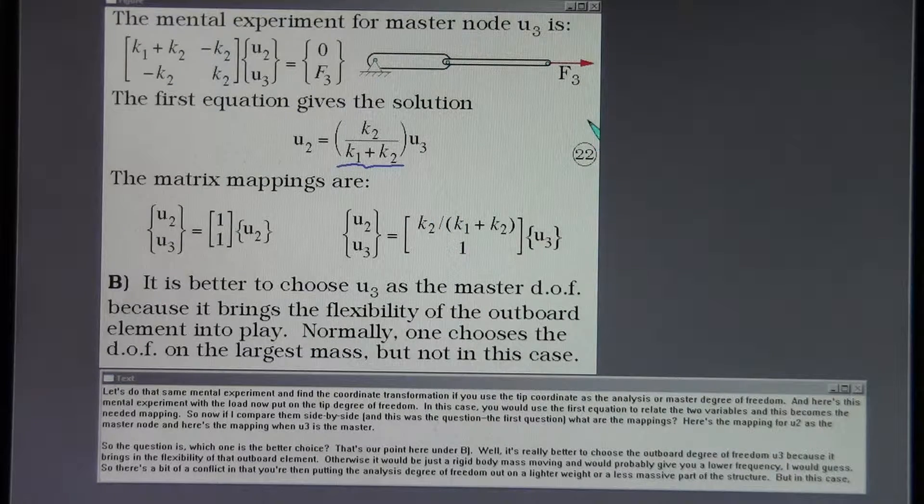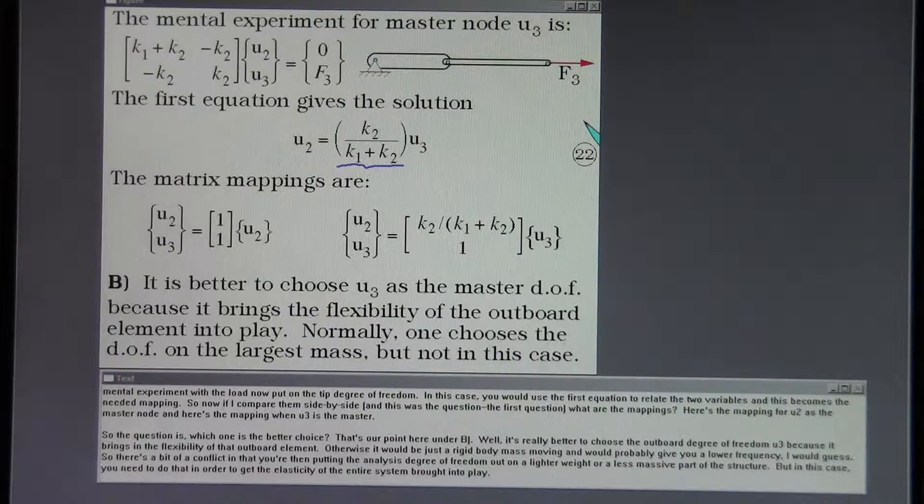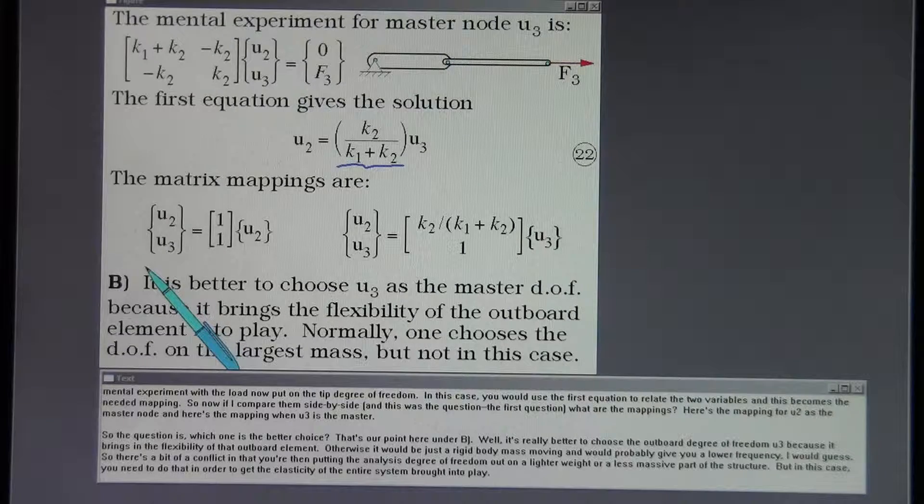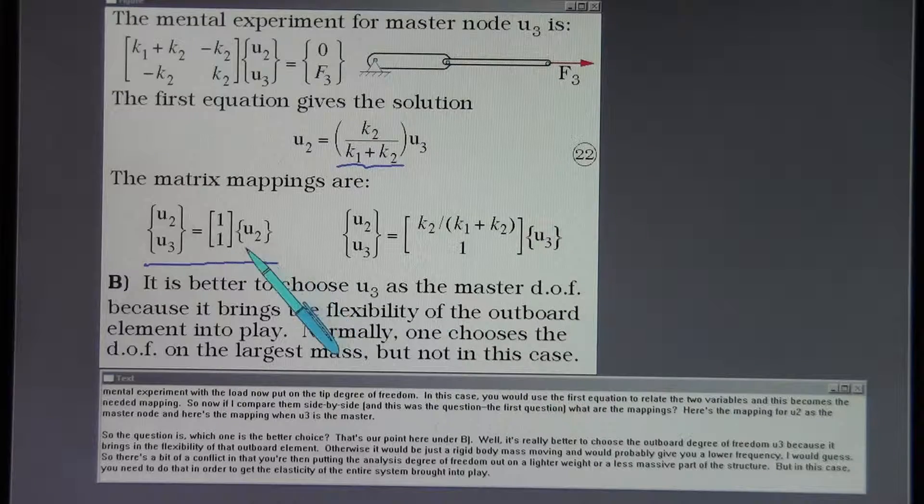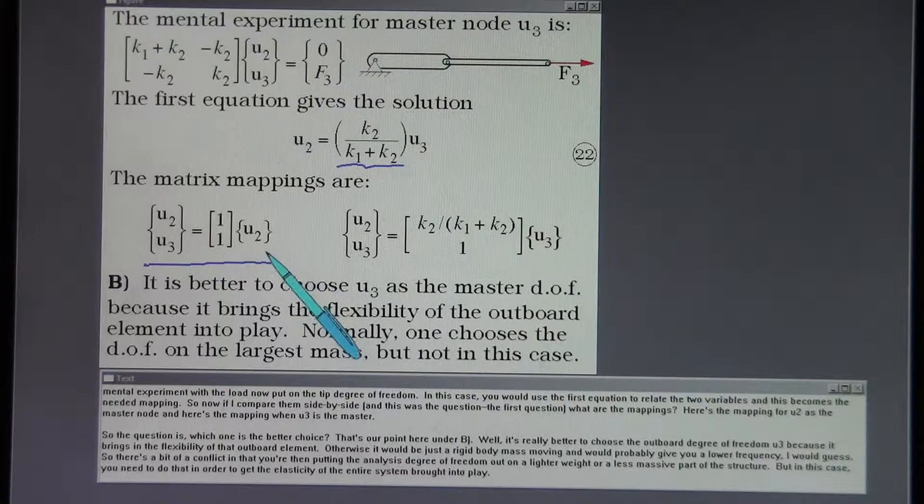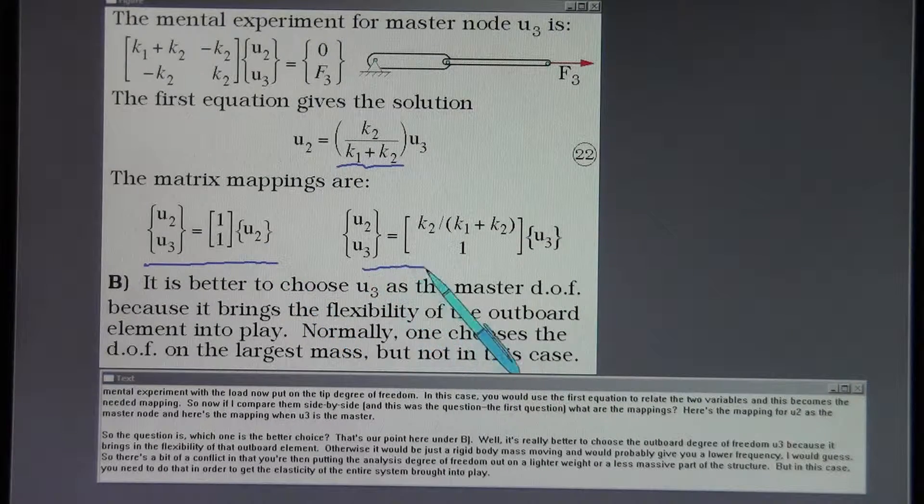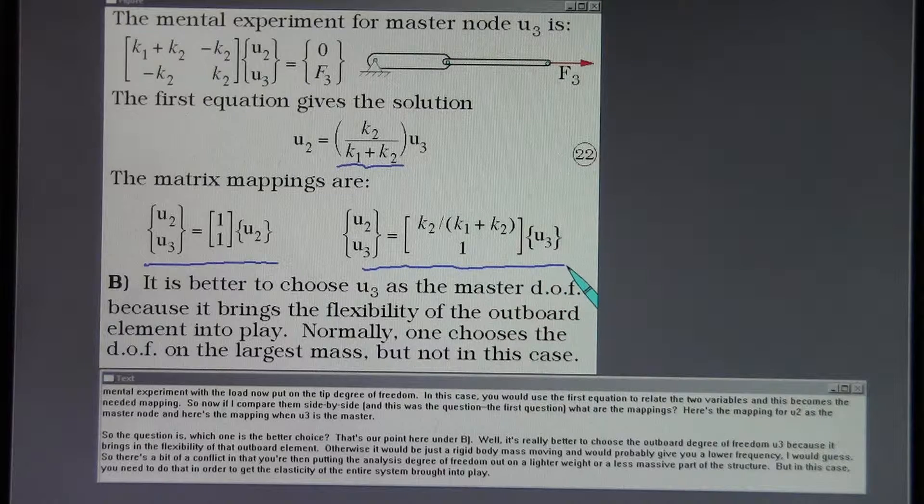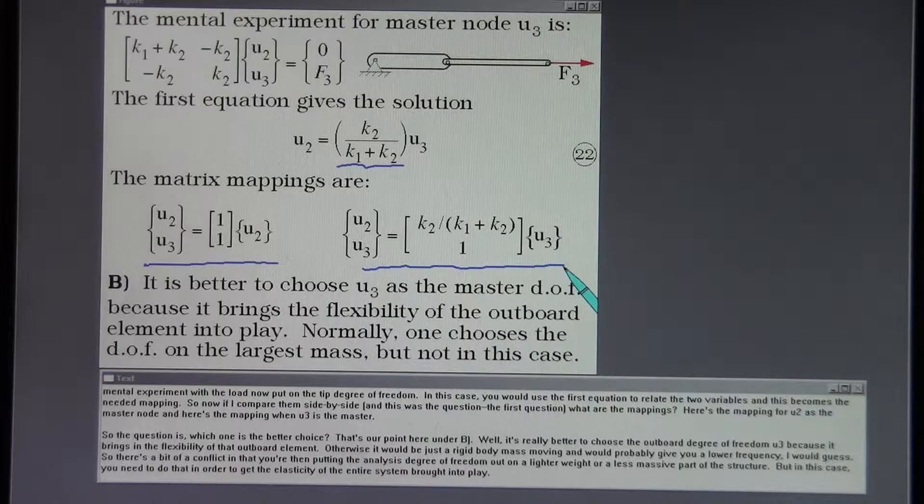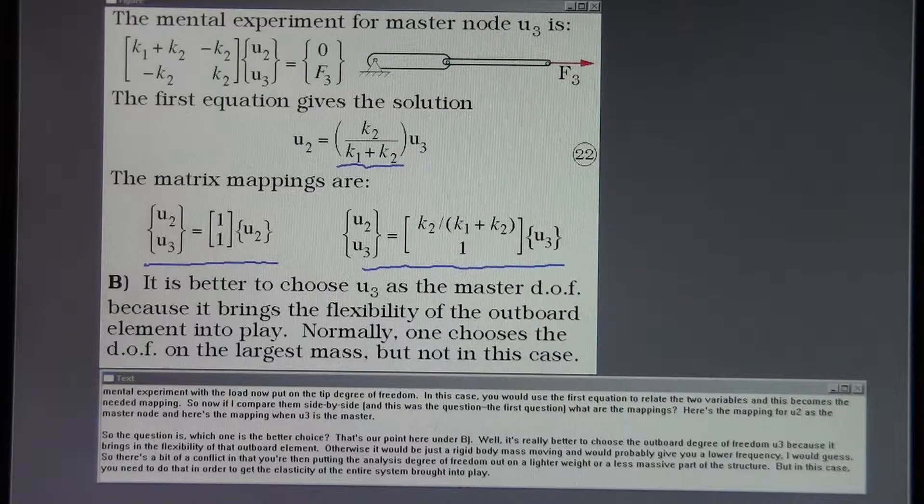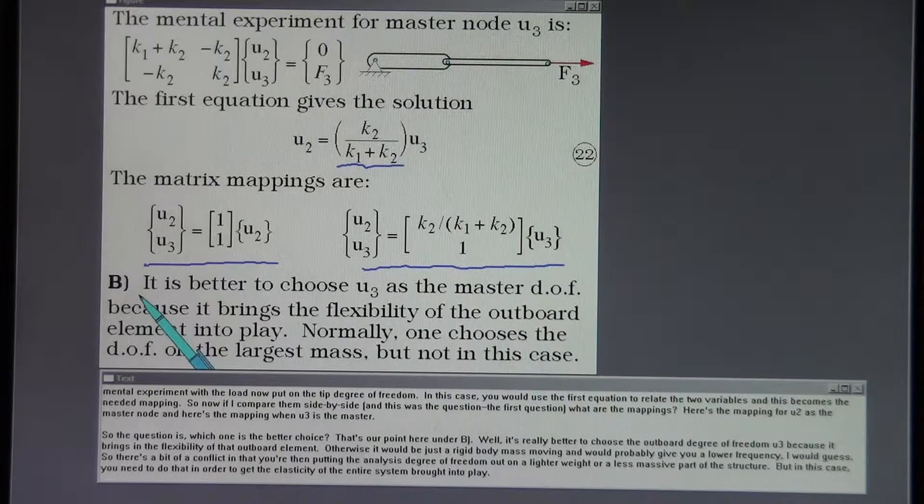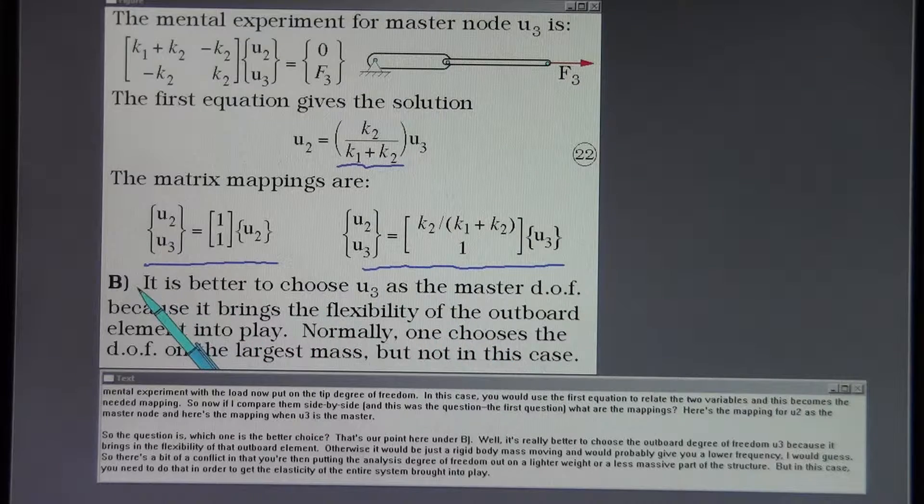In this case, you would use the first equation to relate the two variables, and this becomes the needed mapping. So now if I compare them side by side, and this was the question, the first question, what are the mappings? Here's the mapping for U2 as the master node, and here's the mapping when U3 is the master. So the question is, which one is the better choice?